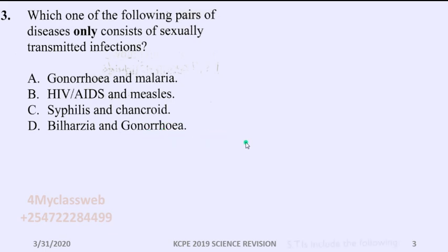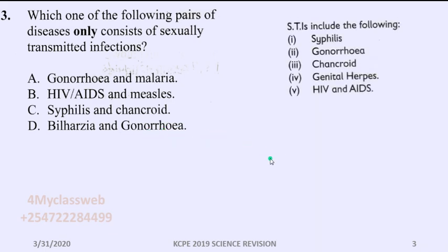Now let us remind ourselves about these STIs. The sexually transmitted infections are syphilis, gonorrhea, chancroid, genital herpes, and HIV and AIDS. These are the common sexually transmitted infections that we have and the ones that we also supposed to learn in primary school.